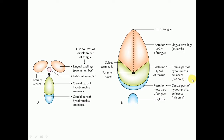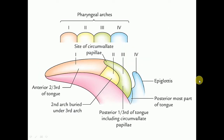In this situation, we must know that the mesoderm of the second arch gets buried below the surface, and the third arch mesoderm grows over it to fuse with the mesoderm of the first arch. So the anterior two-thirds of the tongue develops from the mesoderm of the first arch — the mandibular arch — whereas the posterior one-third develops from the mesoderm of the third arch.